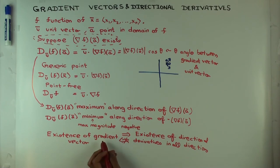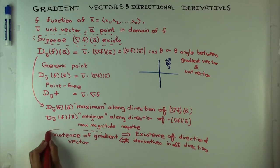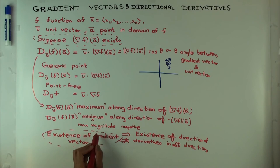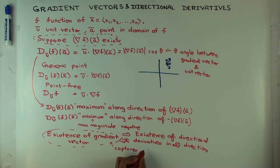And the reason is that the gradient vector doesn't just capture what's happening along linear directions in all directions, it also captures nonlinear directions of approach. Whereas directional derivatives capture only linear directions of approach.